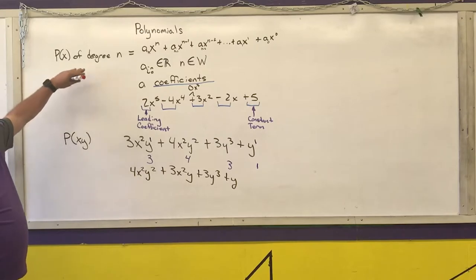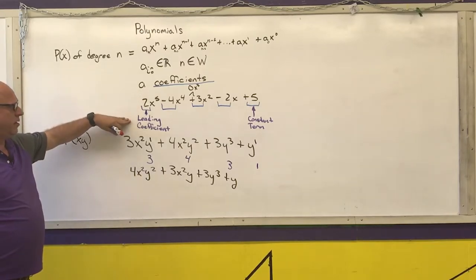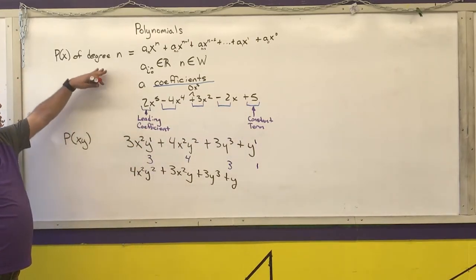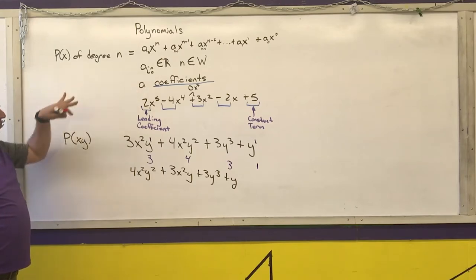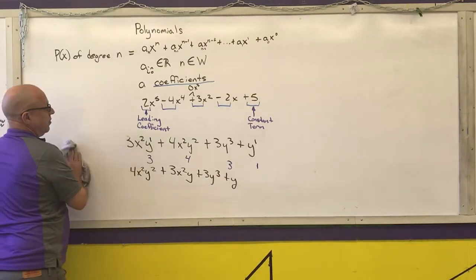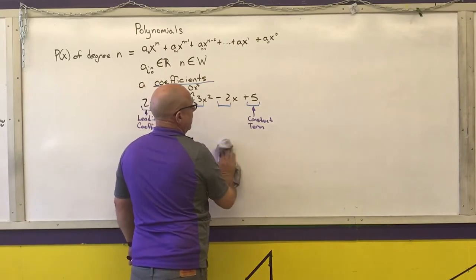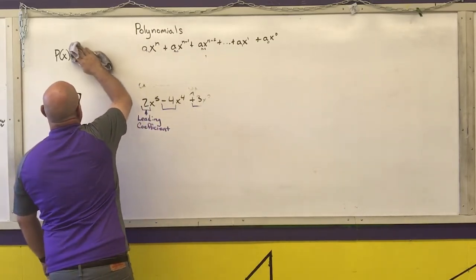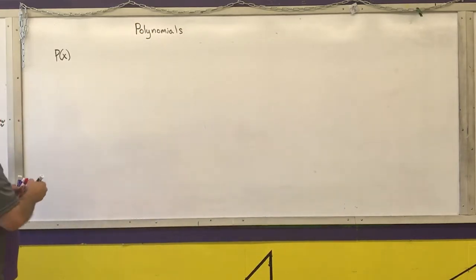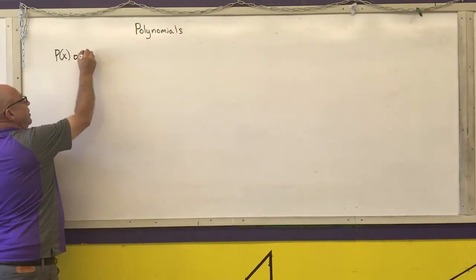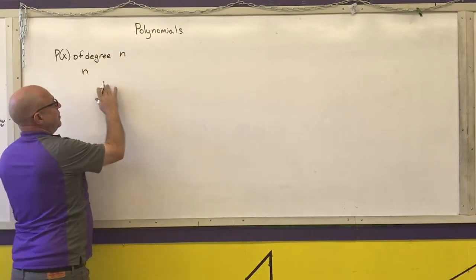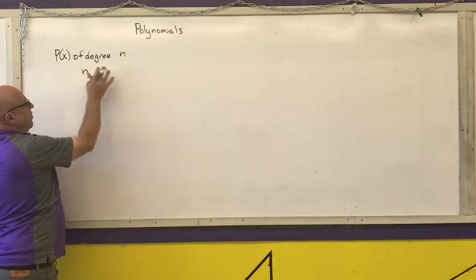So we know what coefficients are, what the leading coefficient is, what the constant term is, and we can write polynomials in standard form for one or more variables. Now let's talk about how we name polynomials — focusing on polynomials of a single variable — and classify them by their degree.